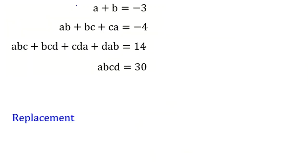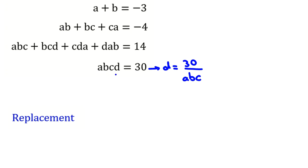As I said before, substitution is one of the most powerful and basic tools here. I know that a + b = -3 and abcd = 30. From the last equation I want to get rid of d, so I say d = 30/(abc) — I divide both sides by abc. I can do this because abc ≠ 0; if it were zero then the left side would be zero, contradicting 30. So d = 30/(abc).